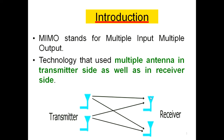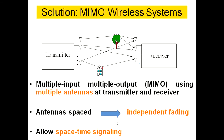These multiple antennas at both transmitter and receiver support wireless communication through multipath propagation. In this MIMO wireless system diagram, the transmitter is shown, and each triangle represents an antenna. We have multiple antennas connected with the transmitter.